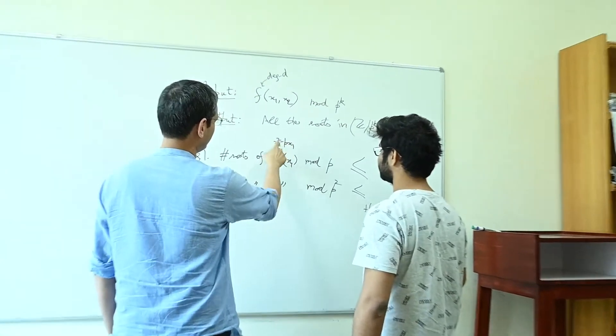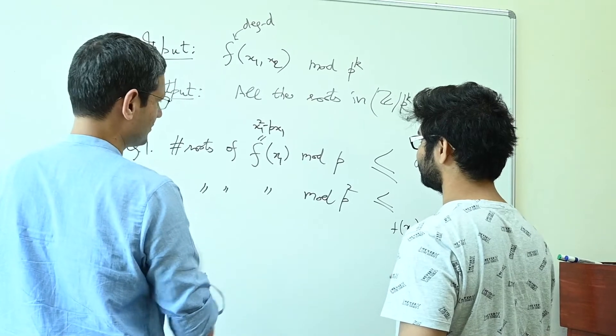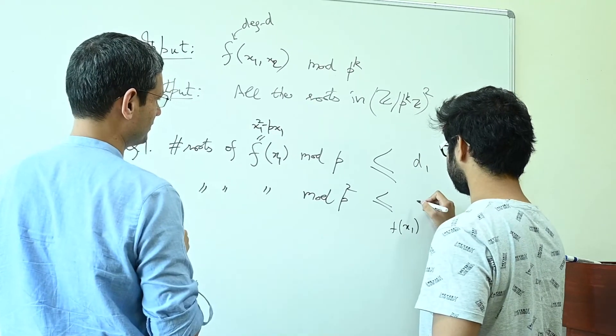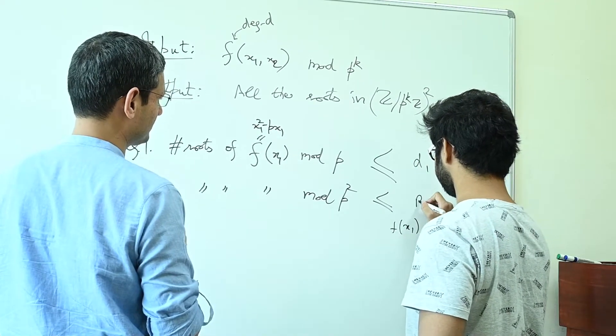One consequence of this theory is that you can show which practical problems are difficult to solve — we call them hard problems. When I say difficult to solve or hard, I mean solving a problem using computers, using computational tools. You can identify which problems are hard.